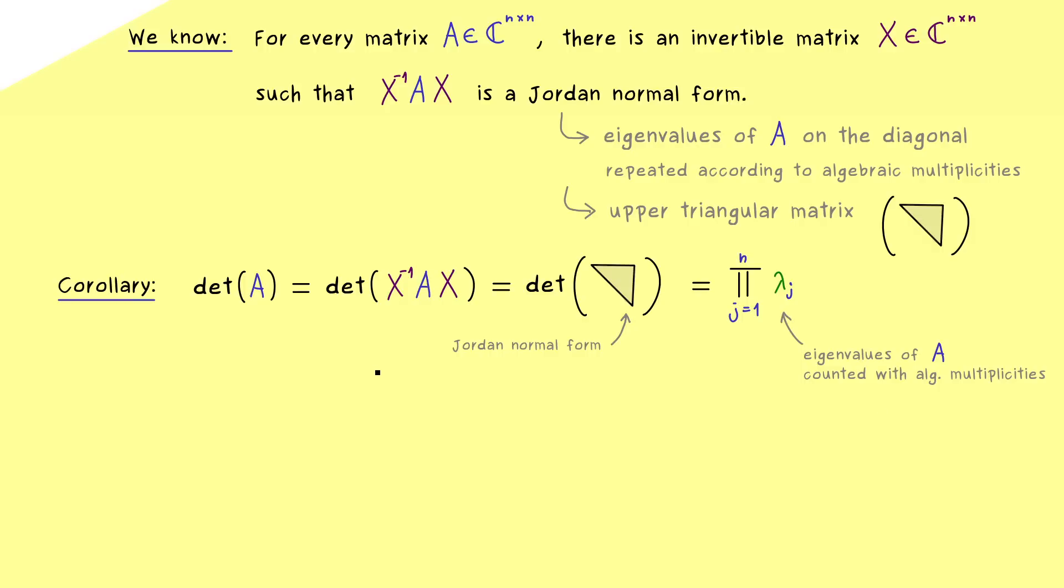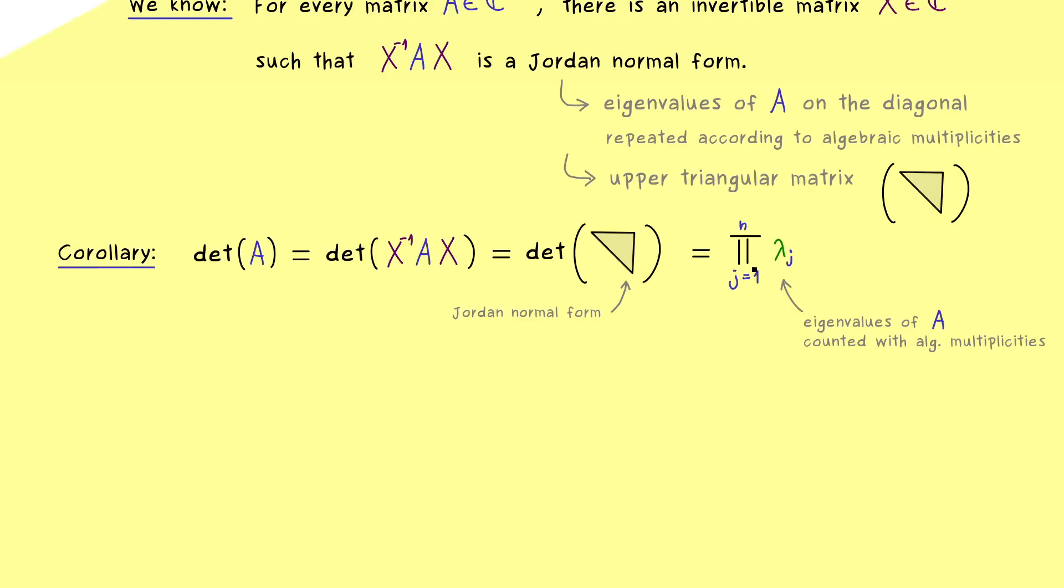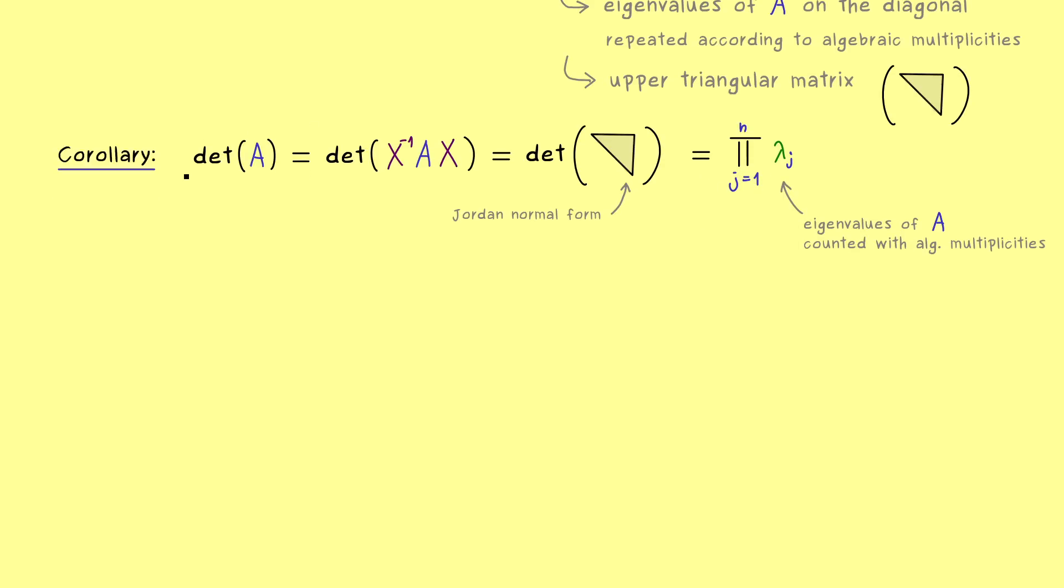Indeed, we already knew that for a diagonalizable matrix A, but now we know it for all complex valued matrices. Please note this also means, if you have a matrix with only real values inside, you can use the formula as well, but maybe the eigenvalues are complex numbers. But it means that the product of these complex numbers is a real number again, because it is the determinant of A.